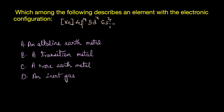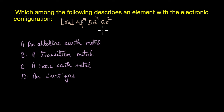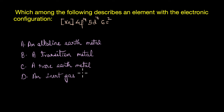The first question asks: which among the following describes an element with an electronic configuration of Xe 4f14 5d7 6s2? We need to identify where exactly this element lies in the periodic table — is it an alkaline earth metal (s-block), a transition metal (d-block), a rare earth metal (f-block), or an inert gas (p-block)?